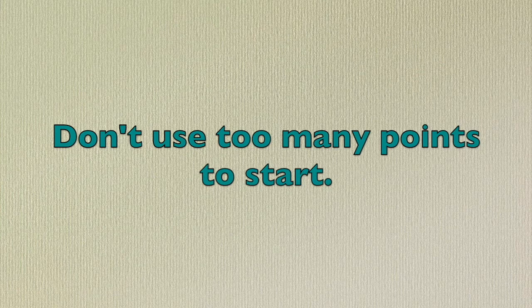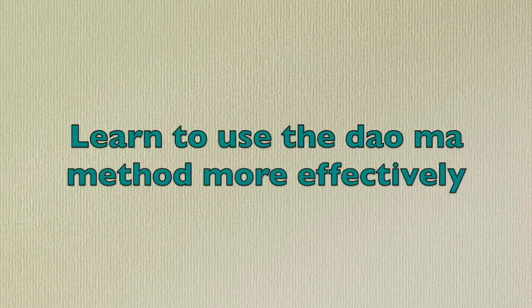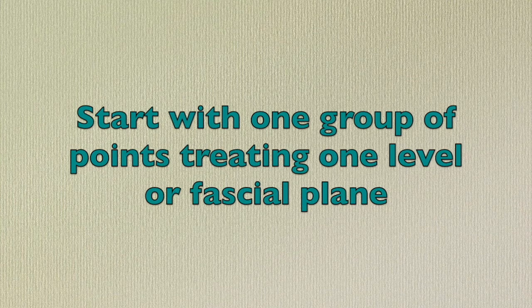This brings up an important point — new material I don't think I've shared before: don't over-commit to doing too many points in the beginning. When I was doing TCM-style acupuncture, you do your pattern identification, find the pattern, then do eight to twelve points and hope the patient gets better. Instead, try selecting one group of points that forms a dow maw. The dow maw is really important to understand, and for my first few years of practice I don't think I fully understood how powerful they were.